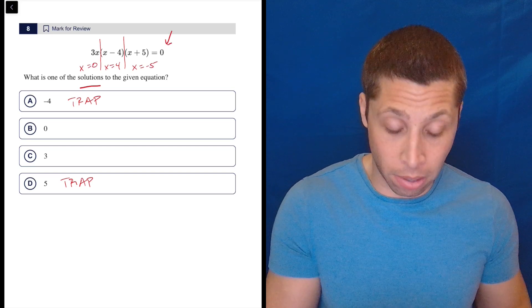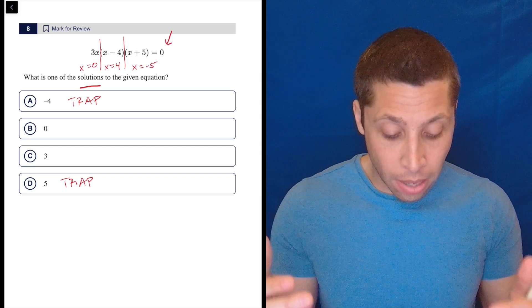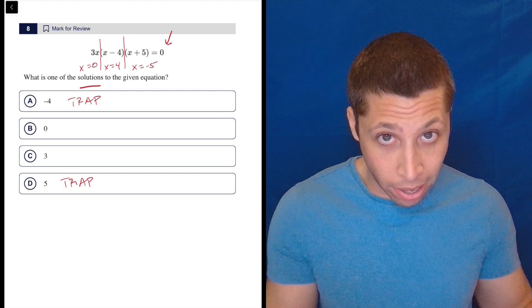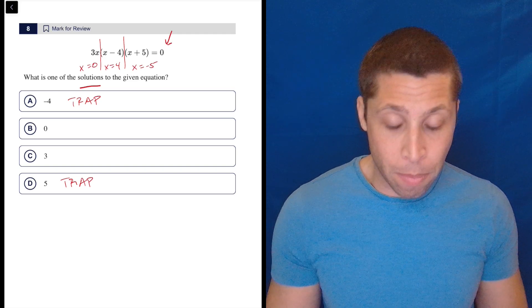So four minus four is zero, not negative four minus four. Negative five plus five is zero. So that's why those are there to mess with us.